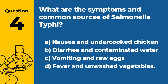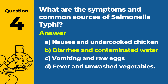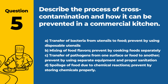Question 4: What are the symptoms and common sources of Salmonella typhi? a. Nausea and undercooked chicken. b. Diarrhea and contaminated water. c. Vomiting and raw eggs. d. Fever and unwashed vegetables. Answer: b. Diarrhea and contaminated water. Salmonella typhi commonly causes diarrhea and is often associated with contaminated water and food.